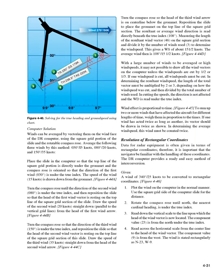Computer solution: winds can be averaged by vectoring them on the wind face of the DR computer, using the square grid portion of the slide and the rotatable compass rose. Average the following three winds: 030°/15 knots, 080°/20 knots, and 150°/35 knots. Place the slide so the top line of the square grid is directly under the grommet with 030° under the true index. Draw the first wind (15 knots) down from the grommet. Figure 4-44a. Turn the compass rose to 080°, reposition the slide to place the head of the first vector on the top line, and draw the second wind (20 knots) straight down. Figure 4-44b.